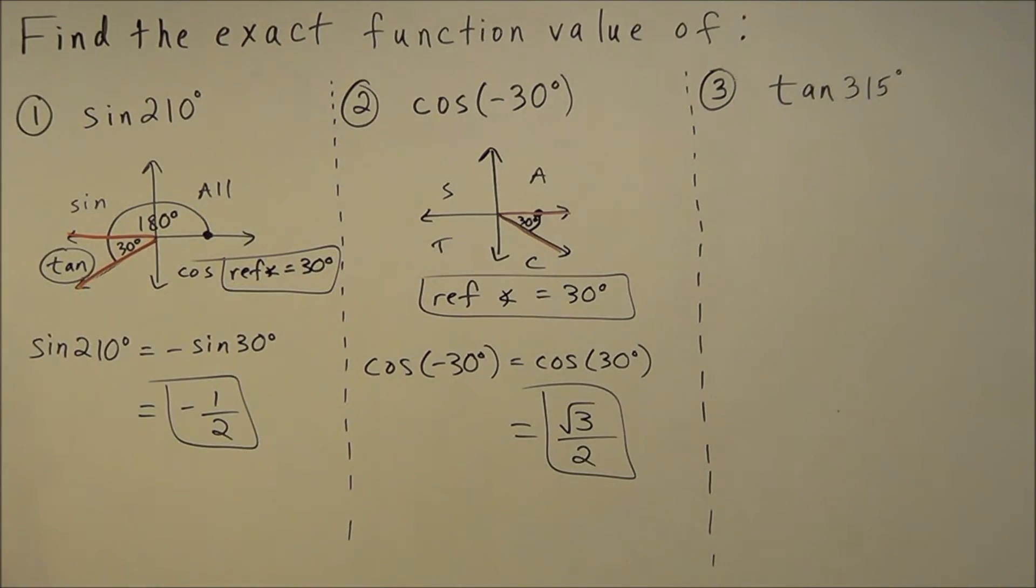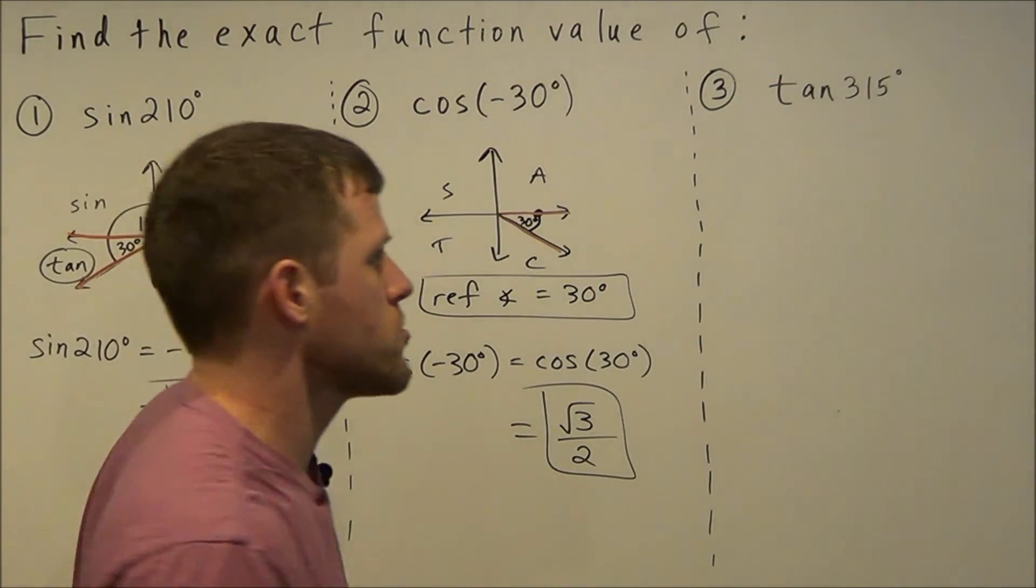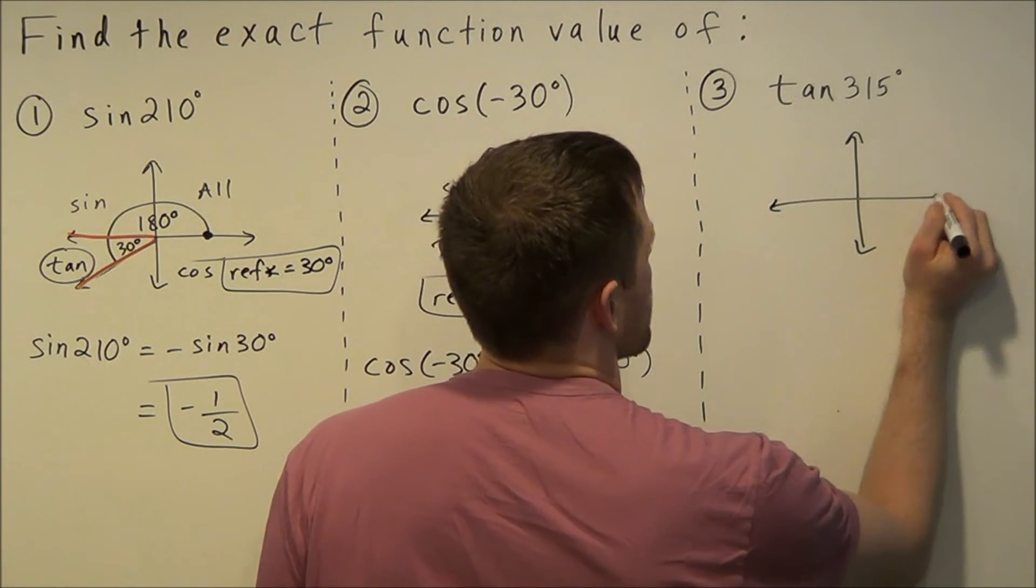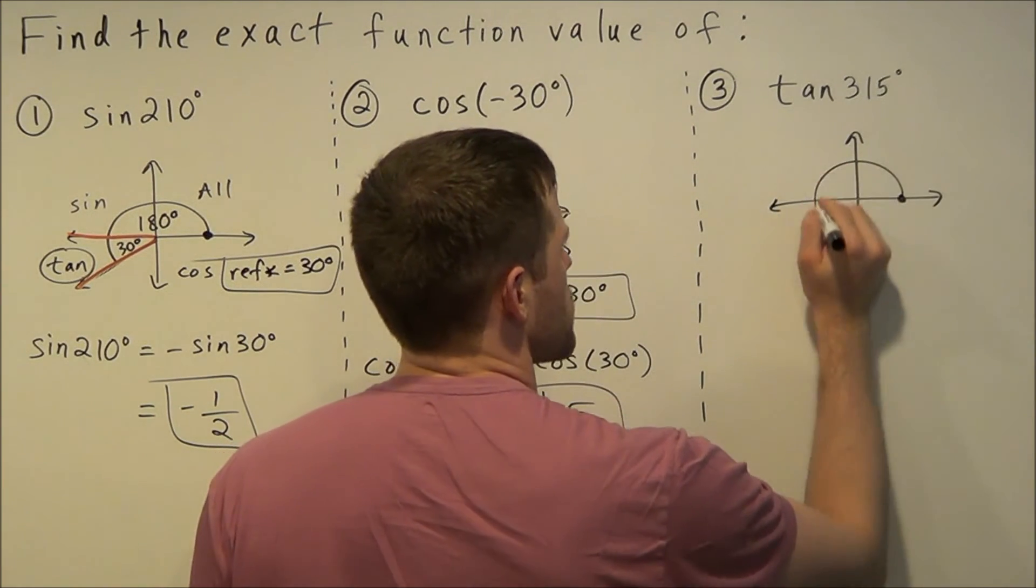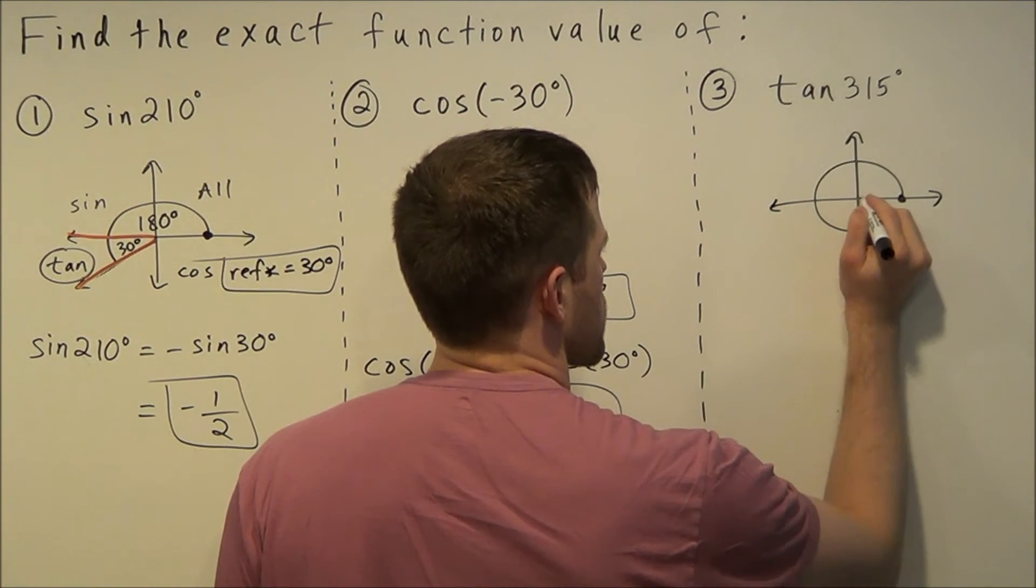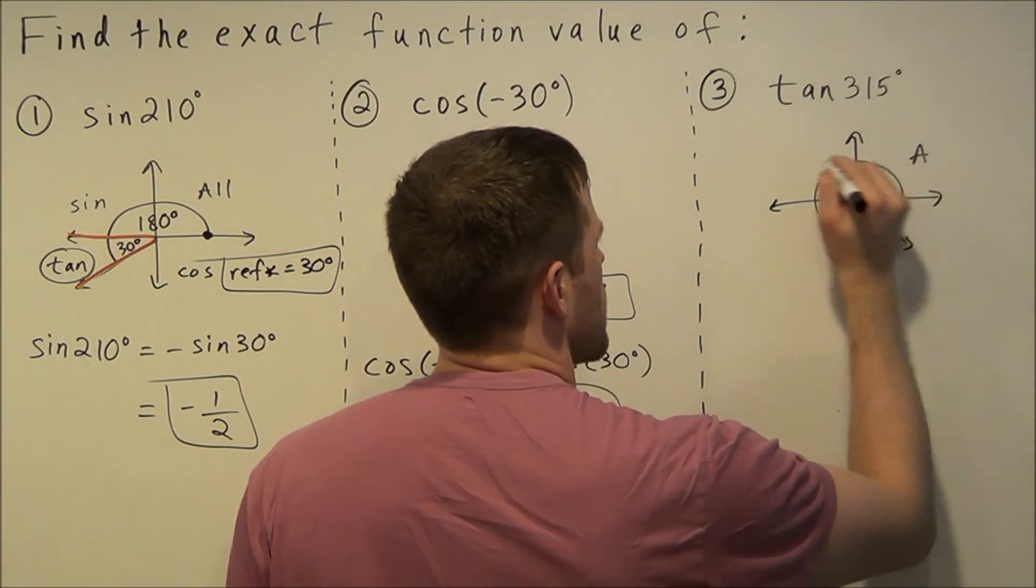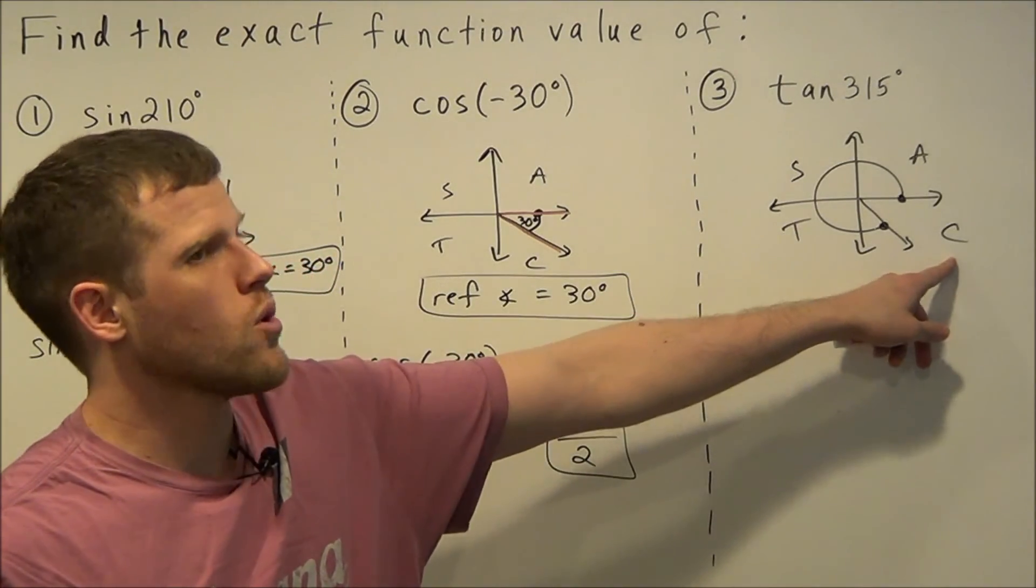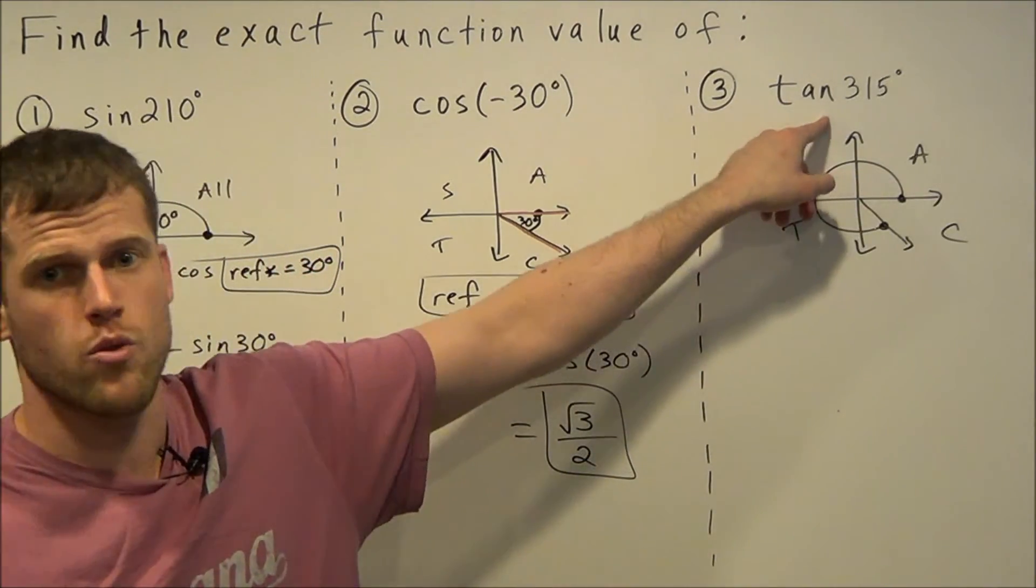The last problem here, tangent of 315 degrees, we're going to draw this out. 315 degrees will terminate in quadrant four, so starting from standard position we draw this, it's going to terminate in quadrant four. Since only cosine is positive in quadrant four, we know our answer to the third question will be negative.